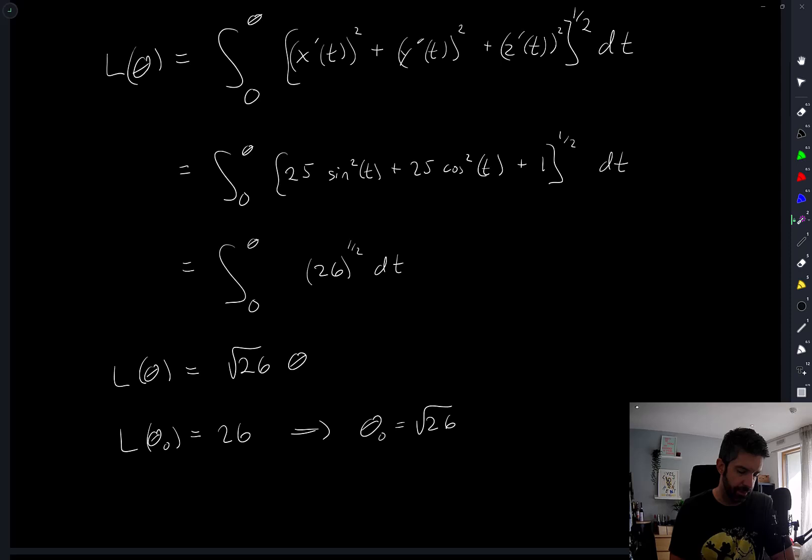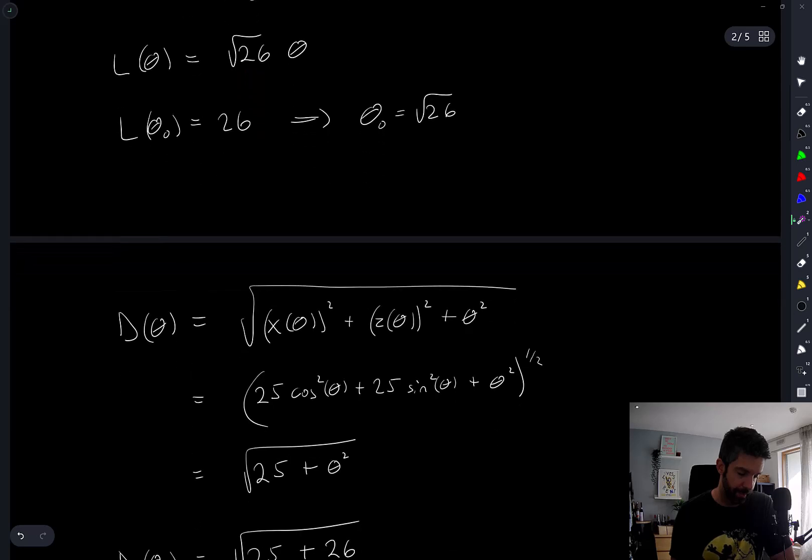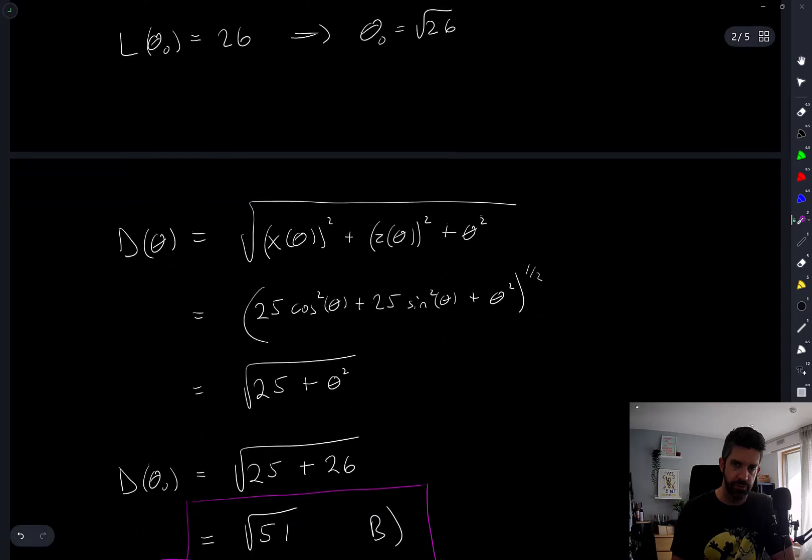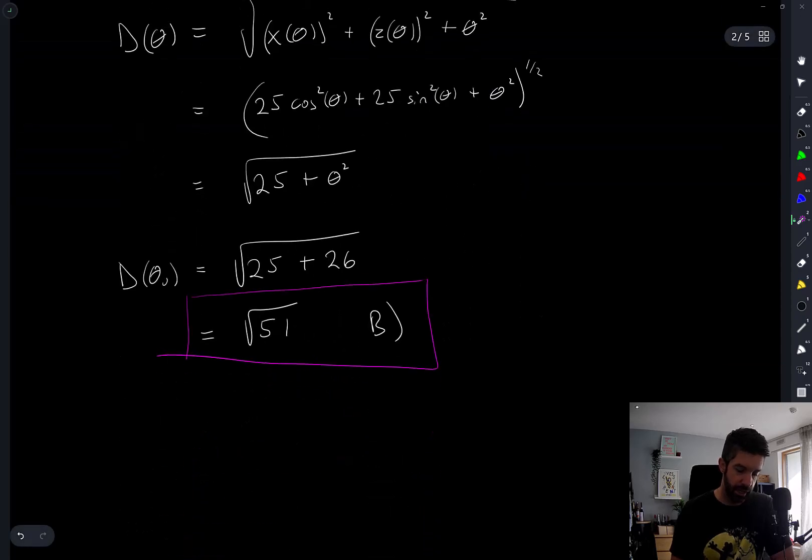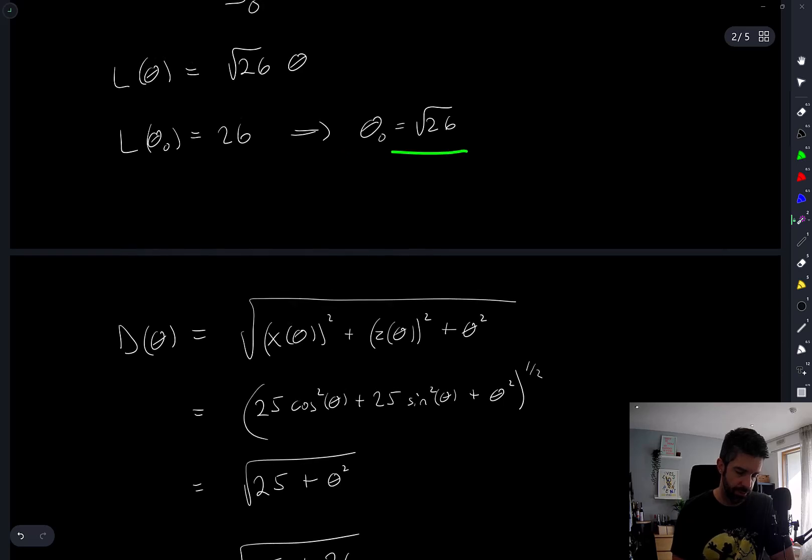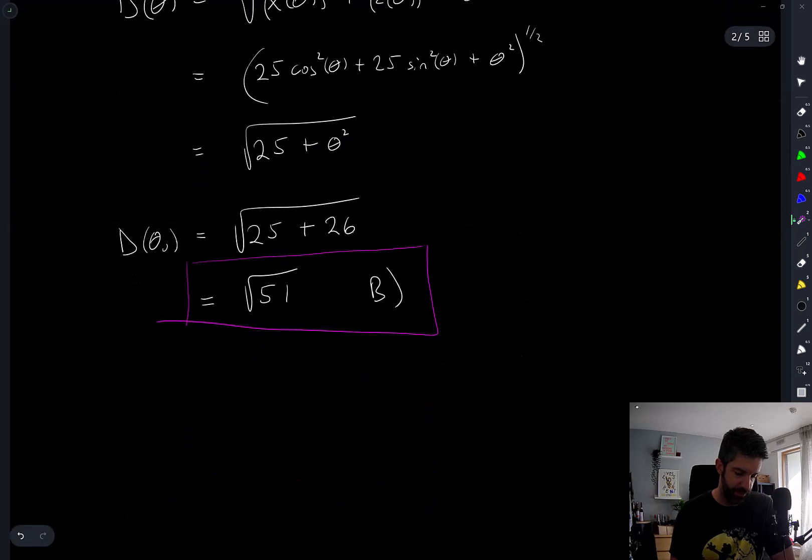I guess if I thought about it a little bit longer, the intuition that it's root 26 would make sense. I can kind of see where that's coming from. But I don't really want to focus too much on trying to gain some intuition for the root 26. I've just gone through the computations and done exactly what was asked for. I solved for theta naught. Pretty straightforward.